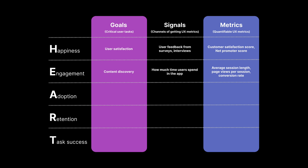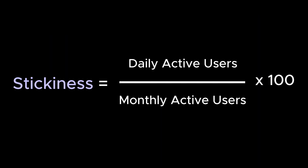Engagement assesses how actively users interact with your app. Goal: users enjoy the app content and functionality, keep engaging with it, and discover new content. Signals: how much time users spend in the app. Metrics: Average Session Length, Session Frequency, Daily to Monthly Active Users, and Conversion Rate. Let's focus on Daily to Monthly Active Users — it's called Stickiness. The higher the ratio, the stickier the product.